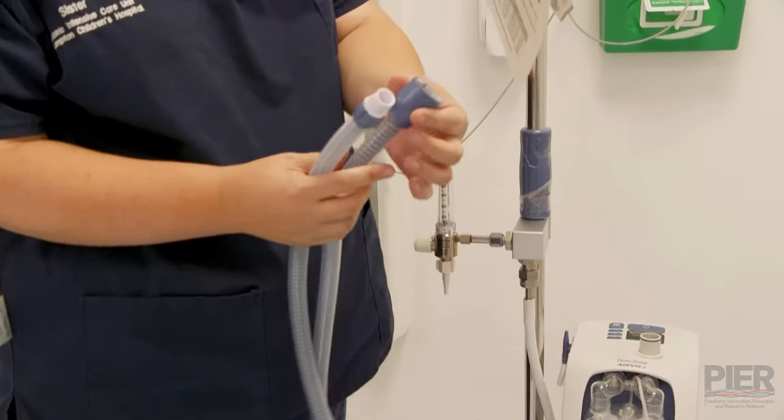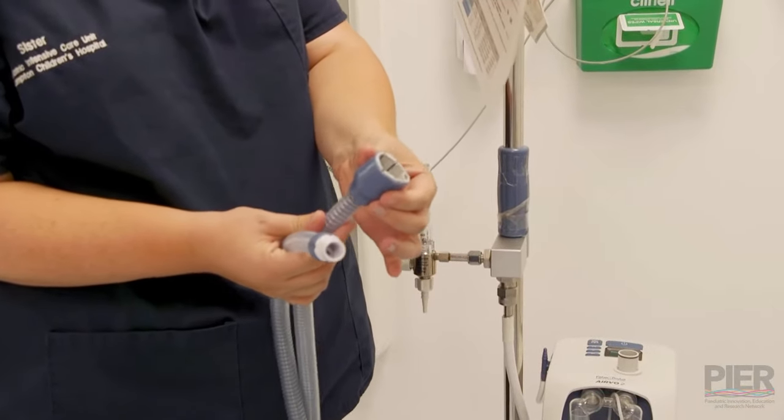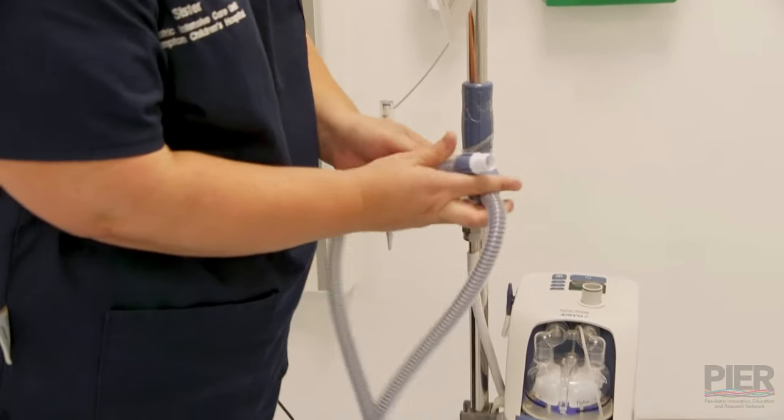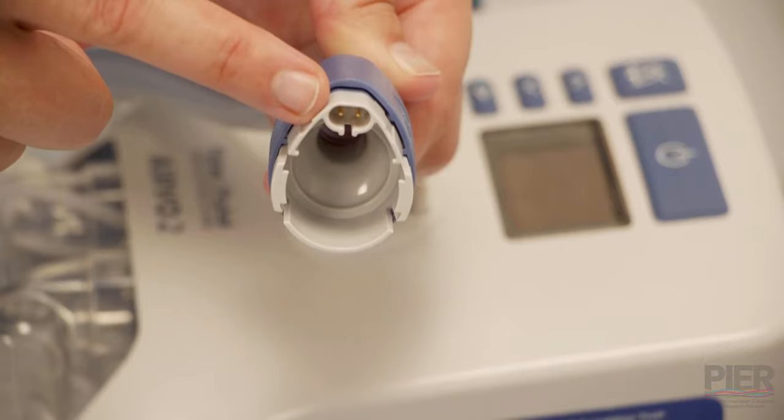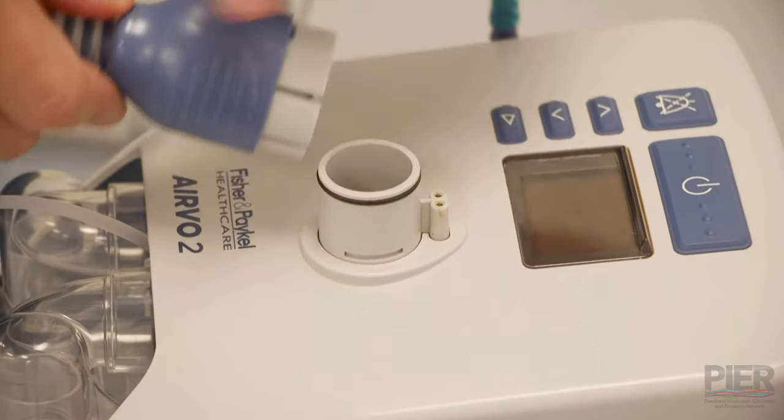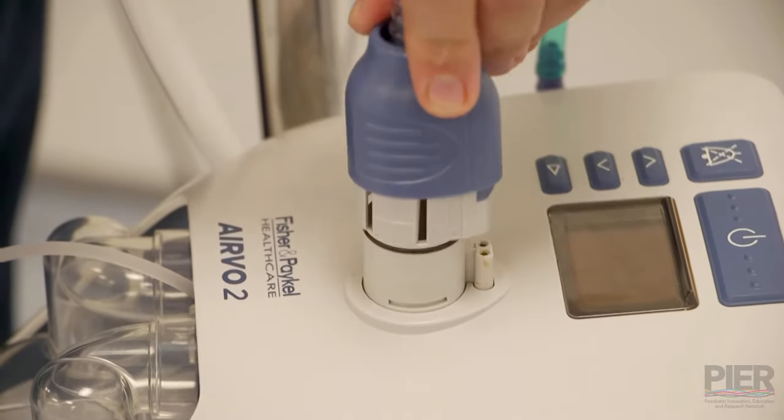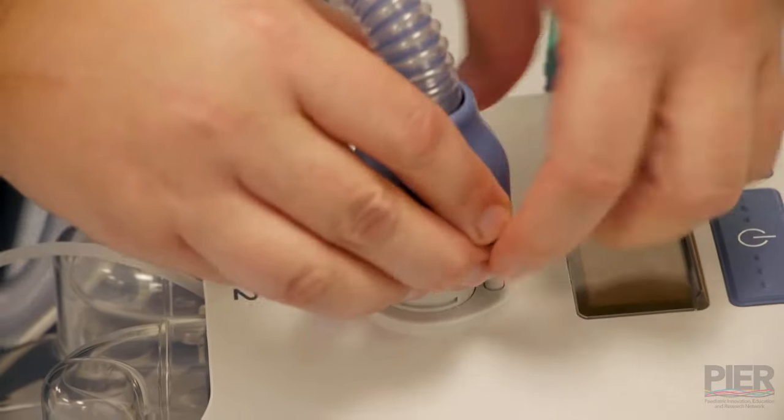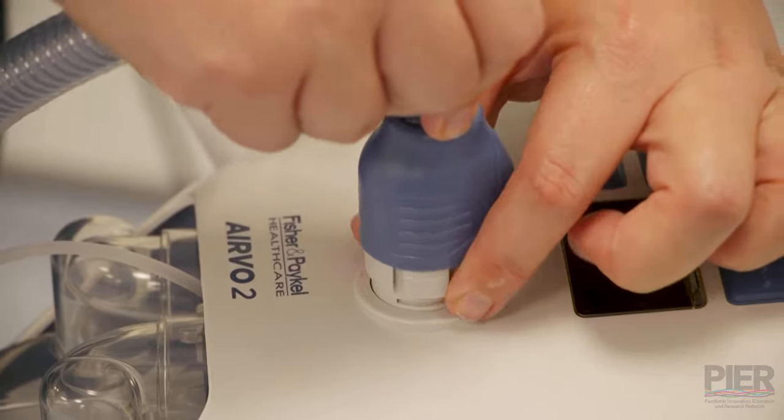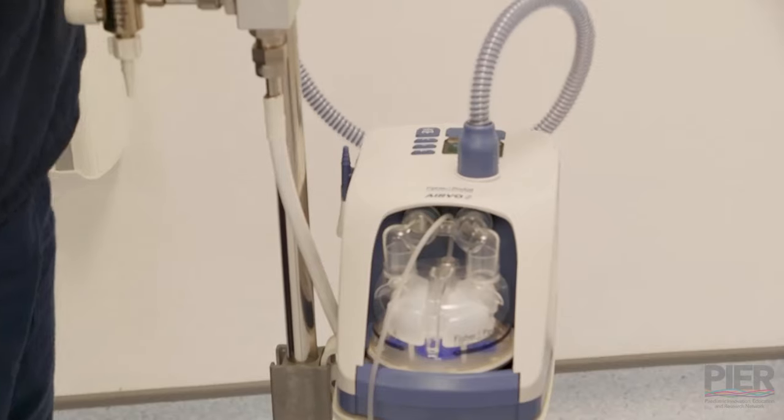This is the patient end and then this is going to go on top of the Airvo machine. When connecting the flow tubing to the Airvo, you want to make sure that you've got the top end with the two spikes going in to where the two points are there. You can lift the blue collar up, slide it down gently. Don't force it, it should just slide on easily. And then click the blue collar into place.